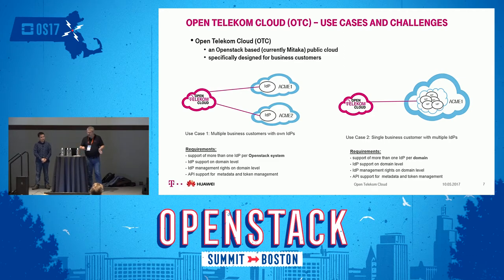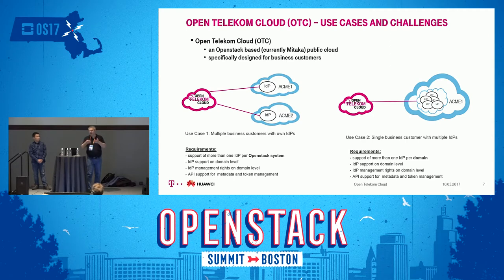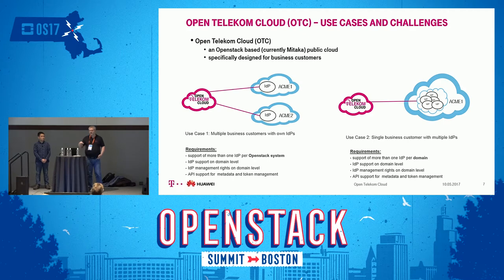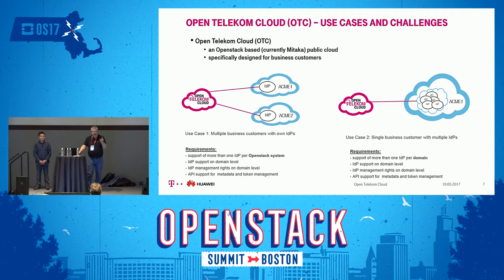In Open Telecom Cloud we have two main use cases. The first is straightforward: we have several customers, each bound in their own Keystone domain, and every customer needs their own identity provider — which is common for business customers who want to integrate cloud offerings into their existing identity management. This could be configured with native Keystone at the administrator level, but for every new customer as a public cloud provider, you'd have to do that configuration manually, which doesn't scale. The second use case is more complex: a single customer domain uses different identity providers simultaneously, which is simply not possible with native Keystone.